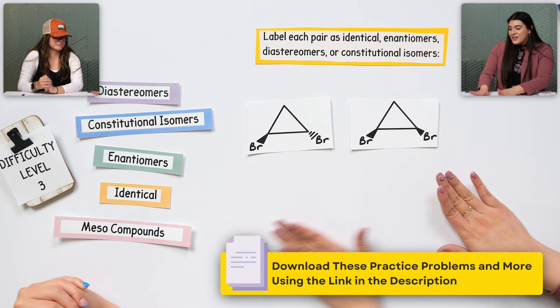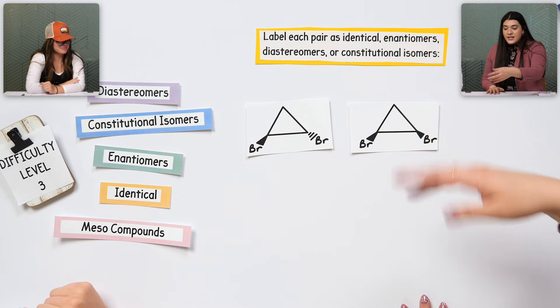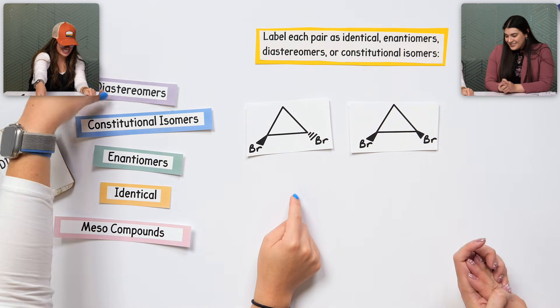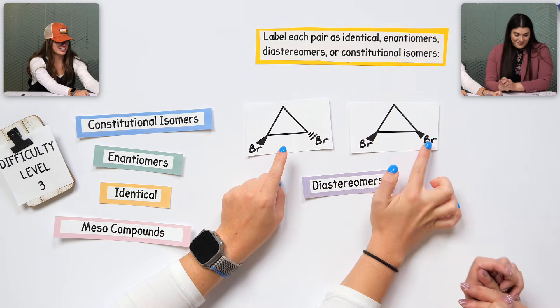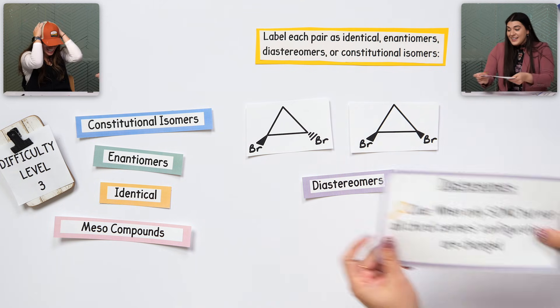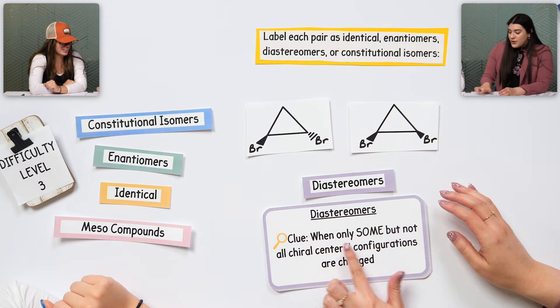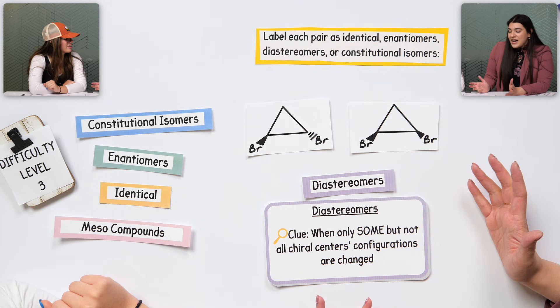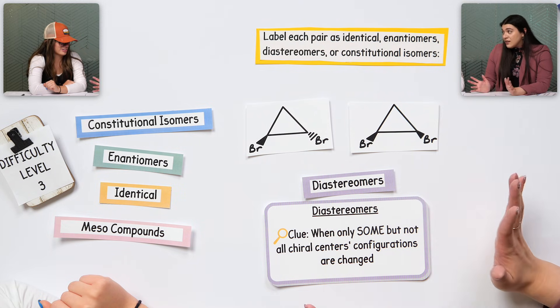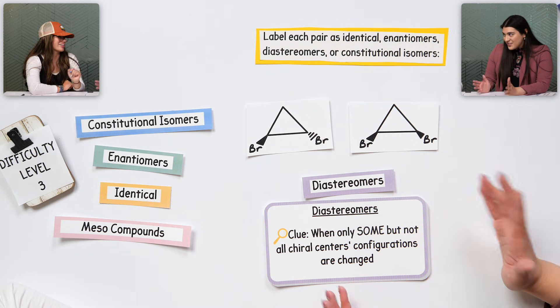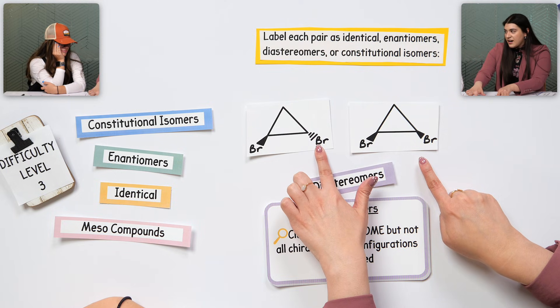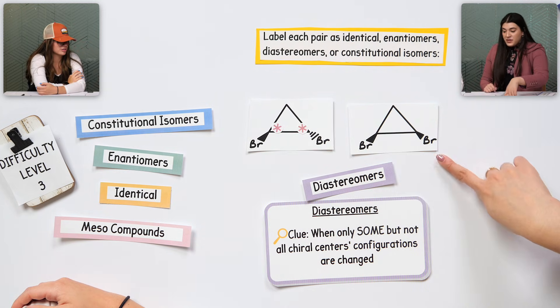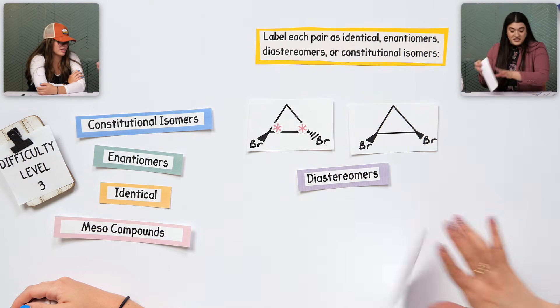And we're bringing in matching. So, we're going to label each pair as either identical enantiomers, diastereomers, or constitutional isomers. I know this one is a diastereomer because only one changed. That's exactly correct. You nailed it. And that's exactly the clue. That's what we're looking at for diastereomers when only some, but not all, the chiral centers configurations has changed. And in this case, we really didn't even have to assign priority, figure out if something was R or S.